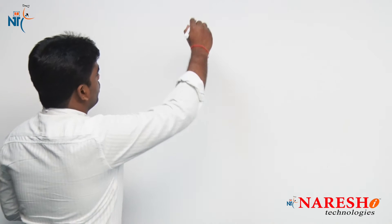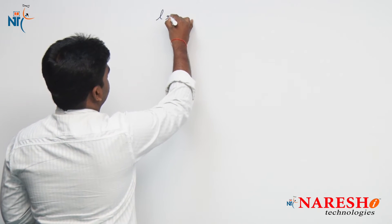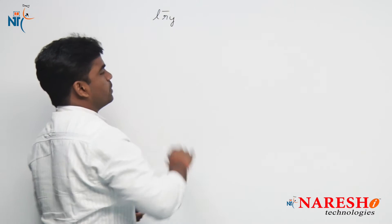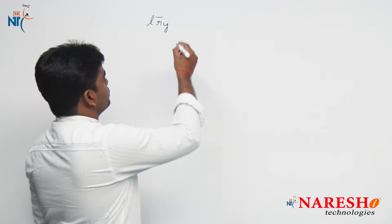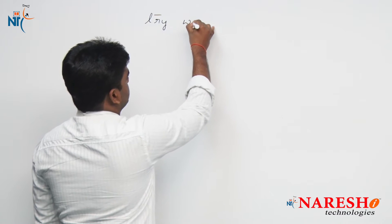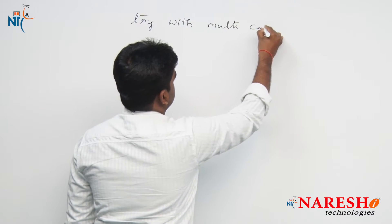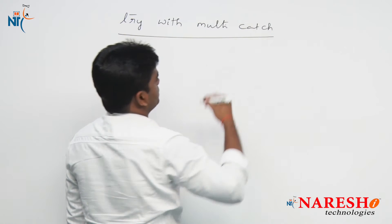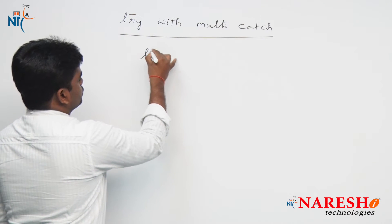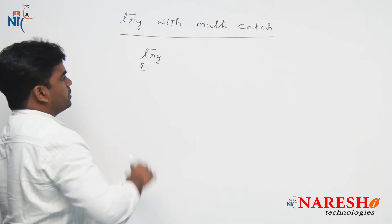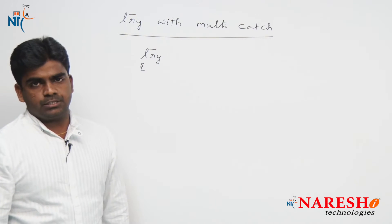The FAQ is: where do we use exactly try with multiple catch blocks? We know how to use a try with multiple catch blocks, but the question is where we use them. In exception handling, one try block can have N number of catch blocks.